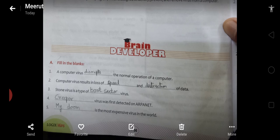Then the second is: the computer virus results in loss of [blank] and [blank] of data. So we will write computer virus results in loss of speed and destruction of data. Then third is: stone virus is a type of [blank] virus.